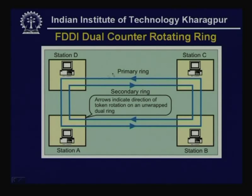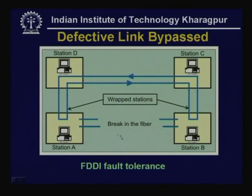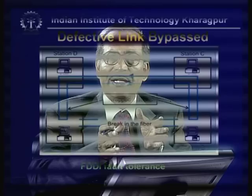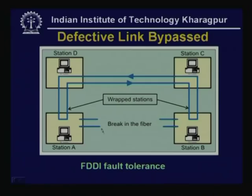The dual counter-rotating ring provides higher reliability. For example, whenever there is a break in the fiber — a link disruption — the ring will automatically wrap up, bypassing the faulty part of the fiber. The ring detects where the breakage occurred, performs the repair by bypassing the fiber, forms a new ring, and continues to operate — completely transparent to the user, who will not know the failure occurred.